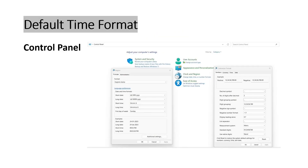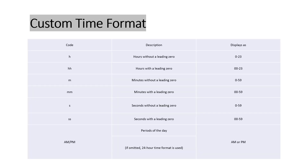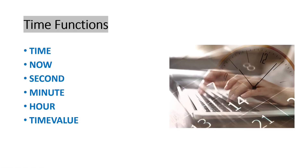That is how you set your default time format in Control Panel. Now let's look at custom time format. Small 'h' without leading zero represents hours, and double 'h' means with a leading zero — similarly for minutes and seconds. If AM or PM is not mentioned, Excel considers 24-hour time format by default.